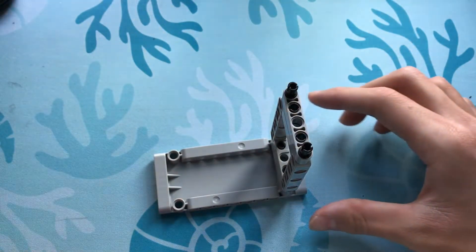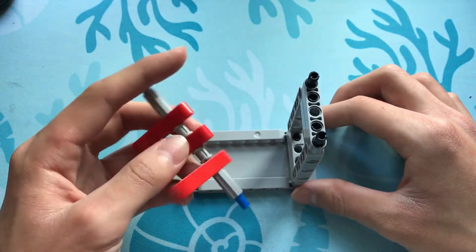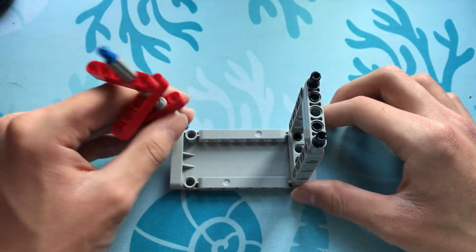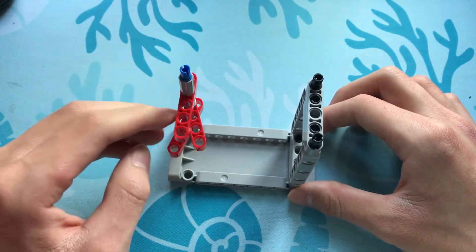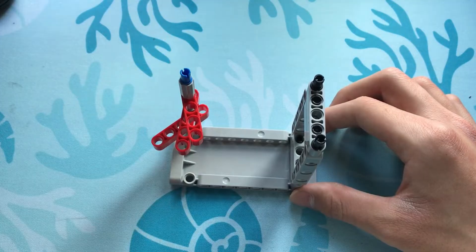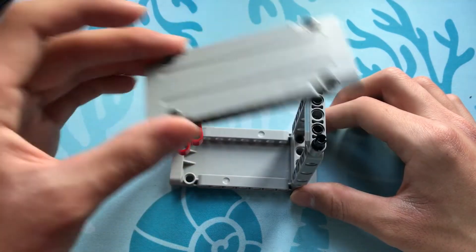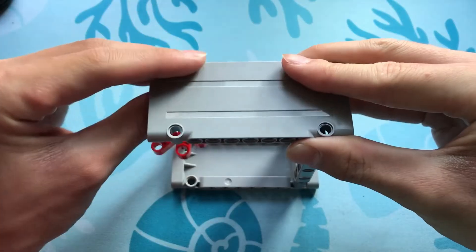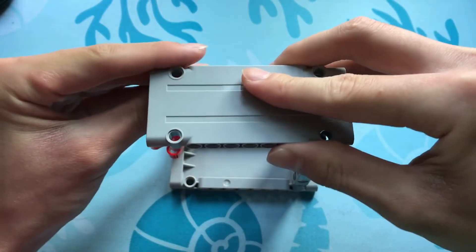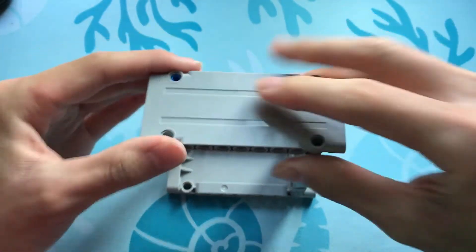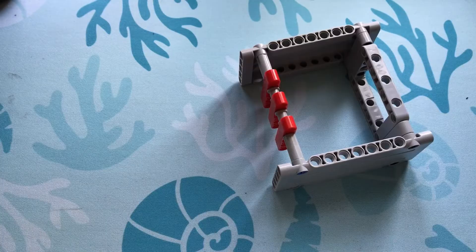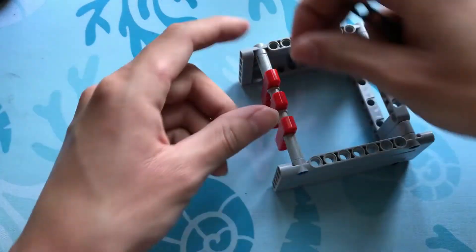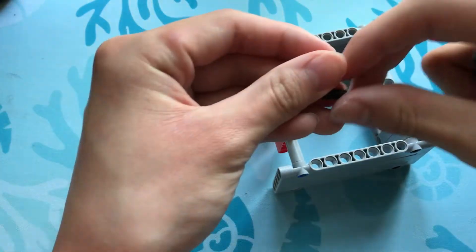After that, let's take what we just built and insert one side in there like that. And then, we'll take another one of these walls and just close it off like that. Let's finish this off by putting pins here and here.